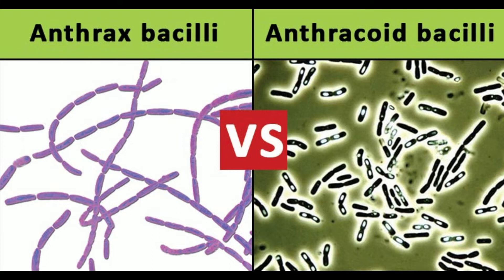Character 9: Blood agar - no hemolysis or weak hemolytic colonies (anthrax) vs. usually well-marked hemolysis (anthrachoid). Character 10: Turbidity in broth - no turbidity (anthrax) vs. turbidity usually seen (anthrachoid). Character 11: Solid medium with penicillin - string of pearls appearance (anthrax) vs. no growth (anthrachoid). Character 12: Gelatin stab agar - inverted fir tree appearance (anthrax) vs. absent (anthrachoid).